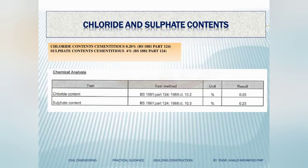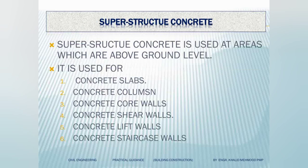We also check chloride and sulfate contents as durability tests. Chloride in hardened concrete should be less than 0.2 percent, and sulfate should be less than 4 percent.